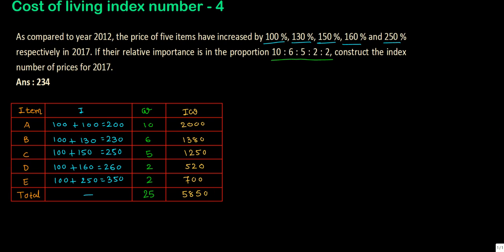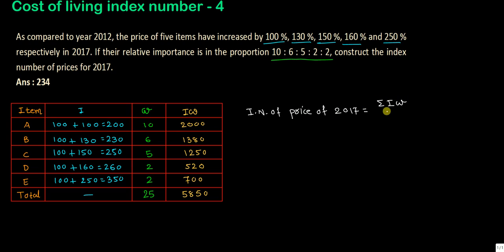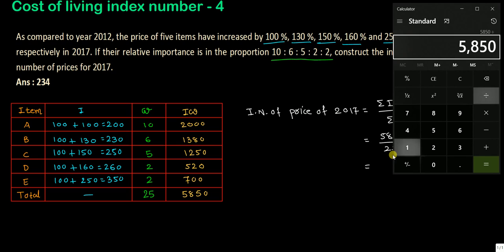Sigma IW is 5850. Now find the index number of price for 2017. Index number equals sigma IW divided by sigma W, which is 5850 divided by 25. The answer is 234.